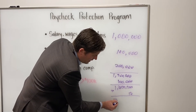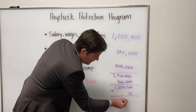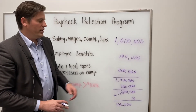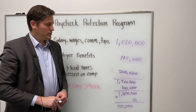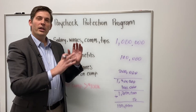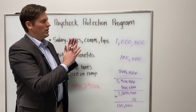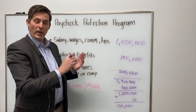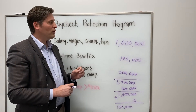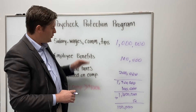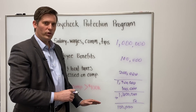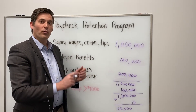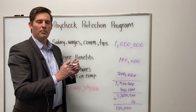To get your monthly figure, you simply divide by 12, and you can fill in that portion of your application with a number of $100,000. You can talk to your accountants or your payroll companies — a lot of them have calculators that will do all of this for you and provide documentation to support the numbers you're using in your application.